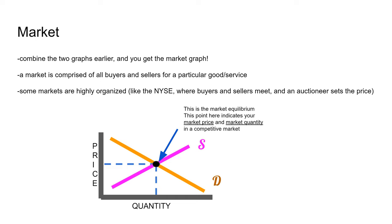A market is a place where all the buyers and sellers come together. If you look at the graph, you would see your demand and your supply curve. Some markets, like the New York Stock Exchange, are really organized — they have an auctioneer that brings together sellers and buyers and sets a price. Other markets, like your regular supermarket, are less formal. The intersection of the supply and demand curves is your equilibrium point, and in a highly competitive market, this will be the point of your quantity and your price. We'll talk more about equilibrium later when we get to the topic of competitive markets.